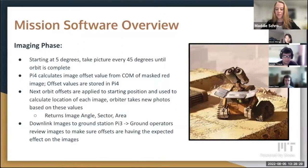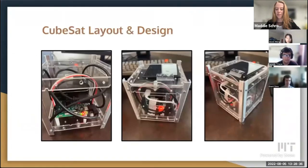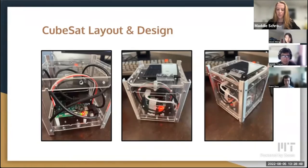Ground operators review all the images to make sure the offset is having the expected effect. In these pictures you can kind of see the design and layout of our CubeSat. We have the Raspberry Pi and the IMU at the bottom, the Raspberry Pi is connected to the battery — a black block at the top — secured with Velcro, and also connected to the battery is the solar panel laying on top.